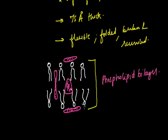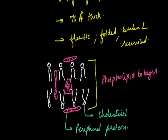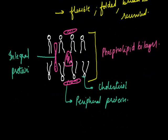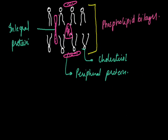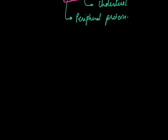Proteins are present in between the lipid layers. There is cholesterol, peripheral proteins at the periphery, and integral proteins embedded between the two lipid layers. According to the fluid mosaic model, two lipid layers sandwich a protein layer, with peripheral proteins at the surface and integral proteins in between.